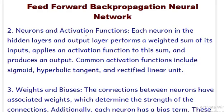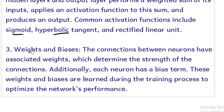We have neurons, represented by circles, and we have something called an activation function. When the input flows through the various layers and comes to the output layer, we apply the activation function to get the exact output. Some common activation functions include the sigmoid function — which we'll be using in our case — the hyperbolic tangent function, and the rectified linear unit. The neural network contains weights and biases. The connections between neurons are associated with weights, which determine the strength of the connections. When we train the network, the weights change, and when the algorithm is complete, we get the final values of the weights.